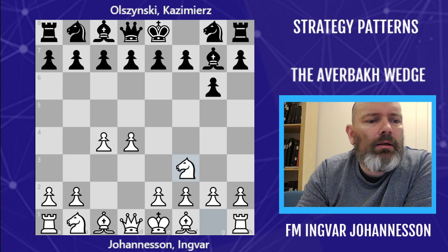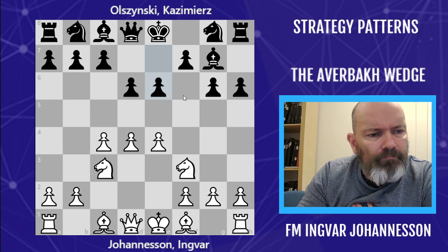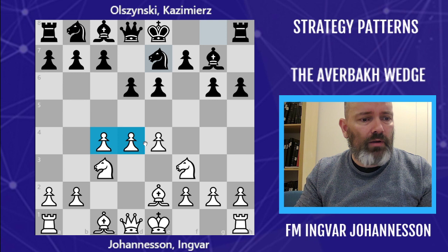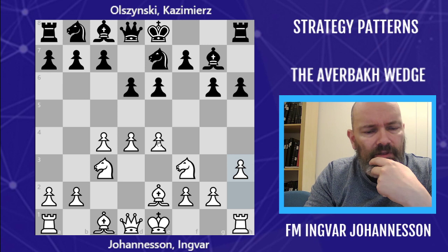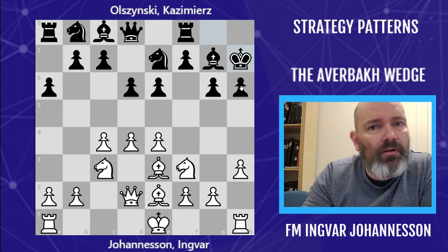He plays h6 — a hippo-type system with d7. This allows White more control than in the King's Indian: beautiful pawns in the center and Black isn't challenging the center like in the King's Indian, so White has a lot of time. I eventually played queen d2 attacking the pawn, he played king h7, and now I played g4.